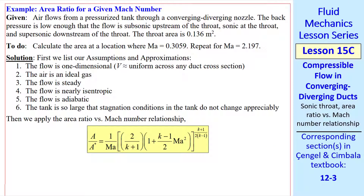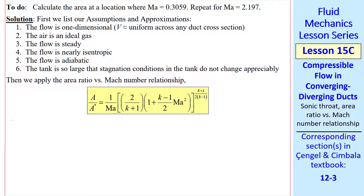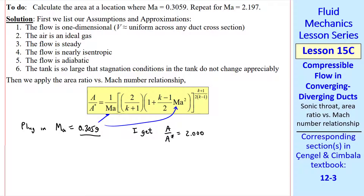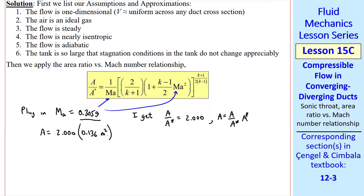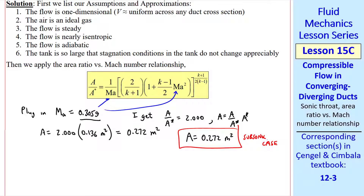This is best illustrated with an example problem. Air flows from a pressurized tank through a CD nozzle. We assume that the back pressure is low enough that we have subsonic flow upstream of the throat, sonic flow at the throat, and supersonic flow downstream of the throat. I also give the throat area. We're asked to calculate the area at the location where Mach number is a given subsonic value. We simply plug in our value of Mach number into the area ratio equation, and to four digits I get A over A-star equal to 2.000. So A equals 2.000 times A-star, giving 0.272 square meters.